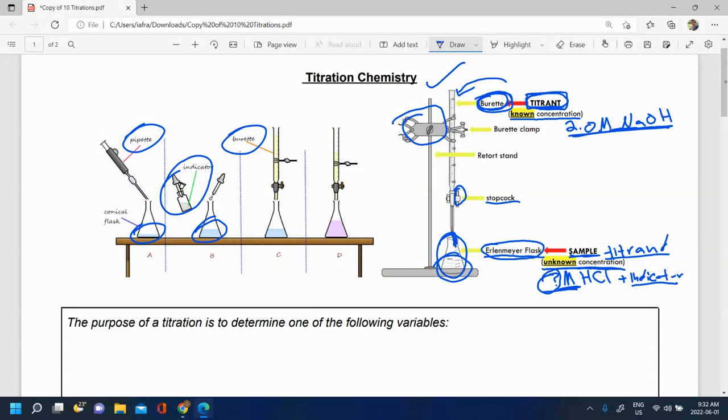Then you fill up your burette with some of the titrant, the stuff of known concentration, and you start adding your drops of the titrant. And then when you get your color change, that's when you know to stop the titration and that all of your substances reacted.